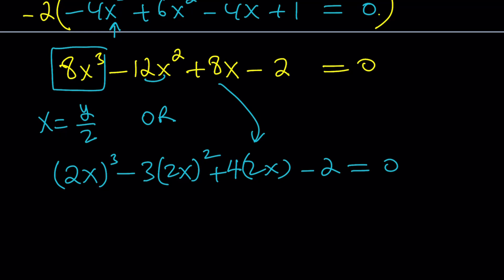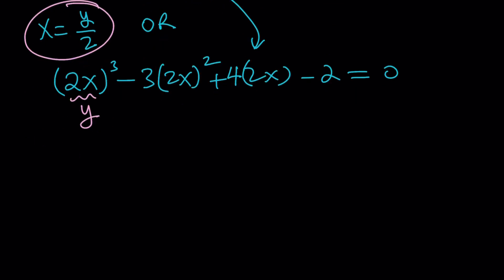Now, you probably figured it out, that we're going to call this something, because this indicates that 2x should be called something. How about y, and this gives us y^3 - 3y^2 + 4y - 2 = 0. Obviously, the monic polynomial is easier to solve.